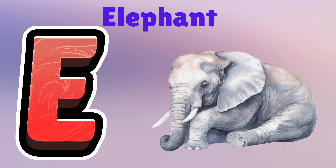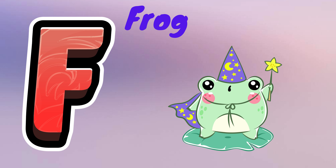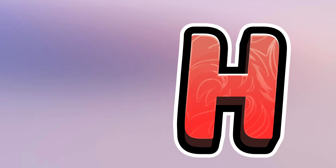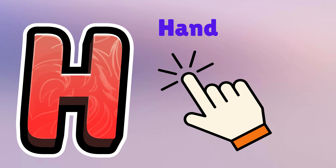E is for elephant, e-e-elephant. F is for frog, f-f-frog. G is for goat, g-g-goat. H is for hand, h-h-hand.